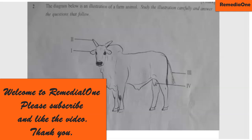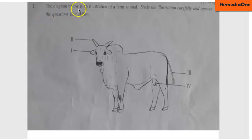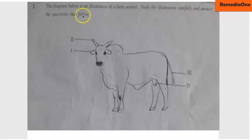Welcome to Remedia One Platform for Learning — your number one platform for learning integrated science. Today our discussion is WASSCE practicals, part three, question number two. There is a diagram here and this diagram below is an illustration of a farm animal. Study the illustration carefully and answer the questions that follow.